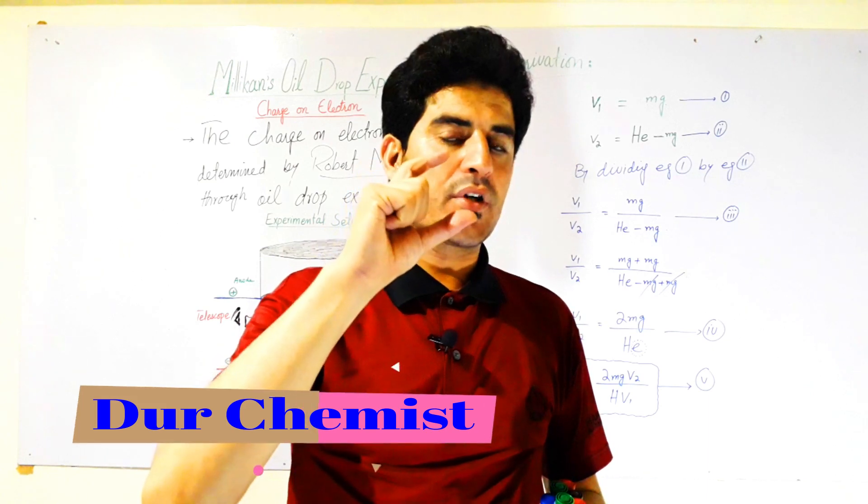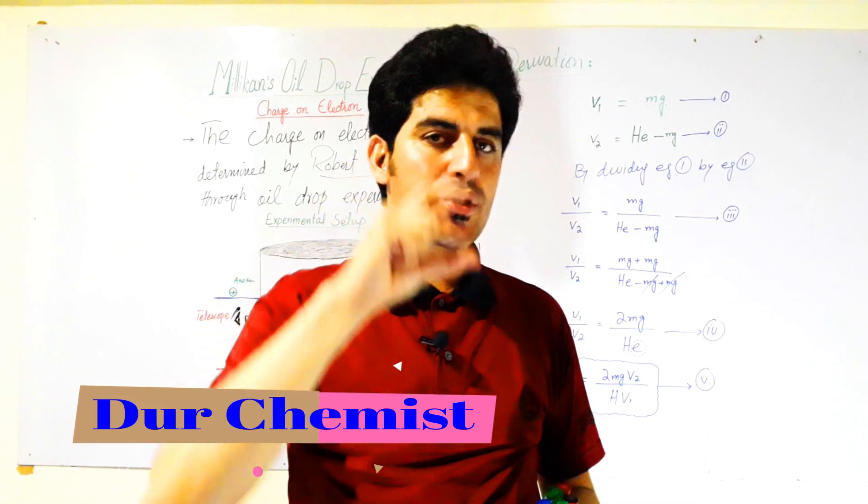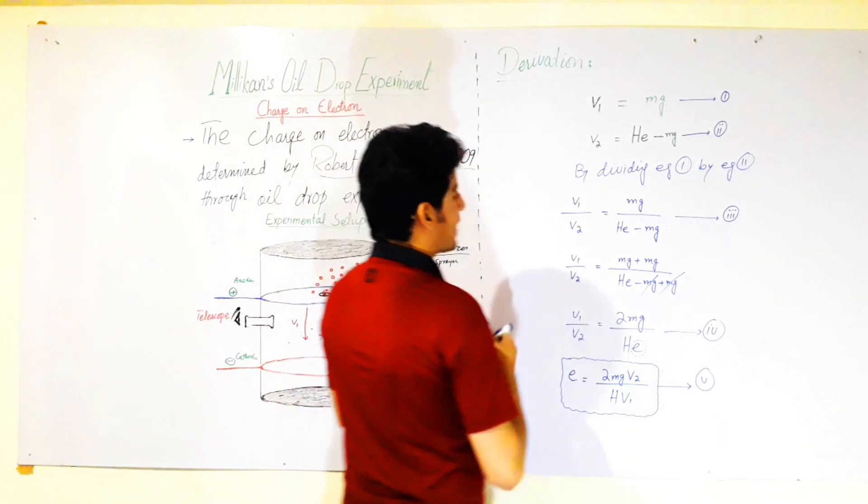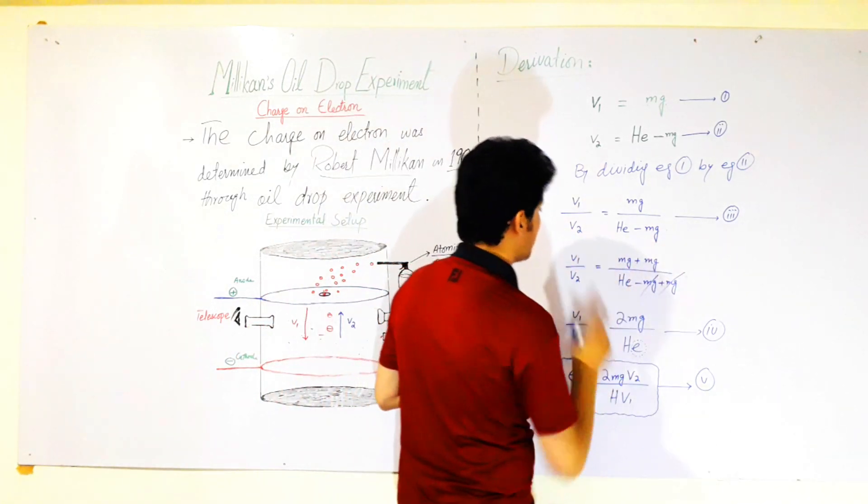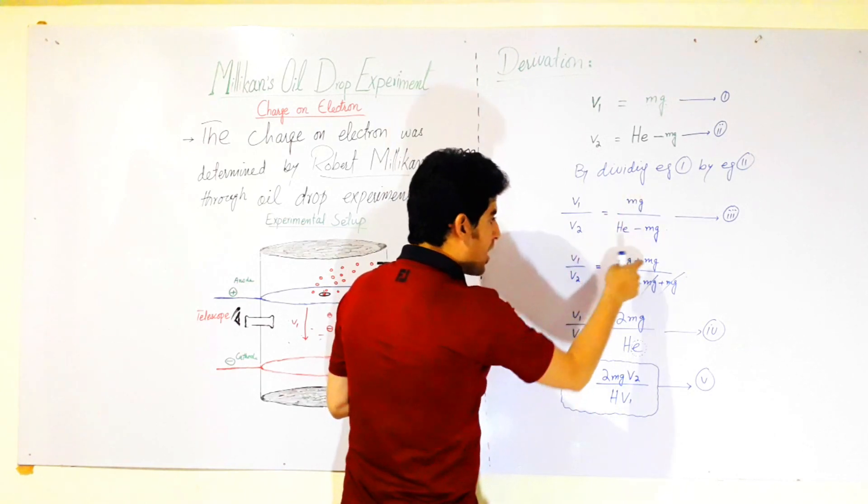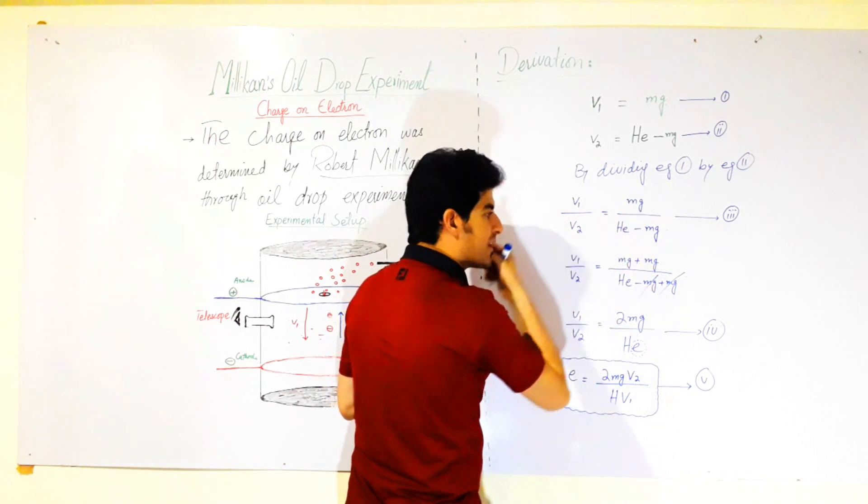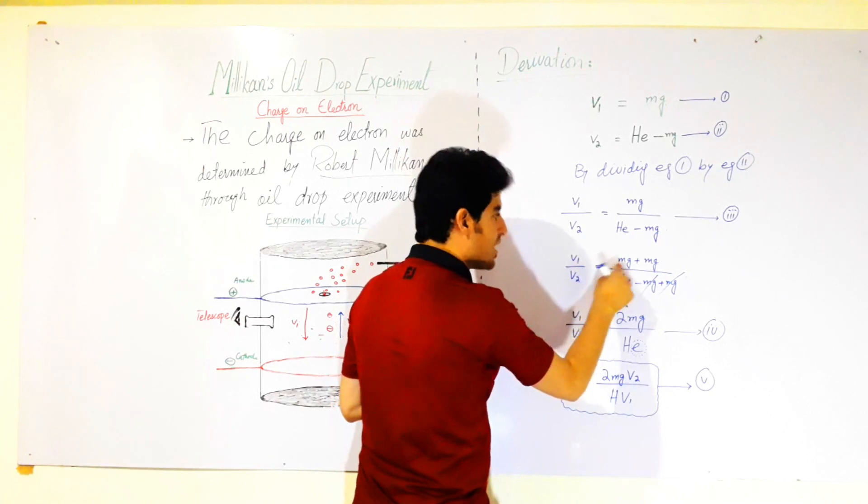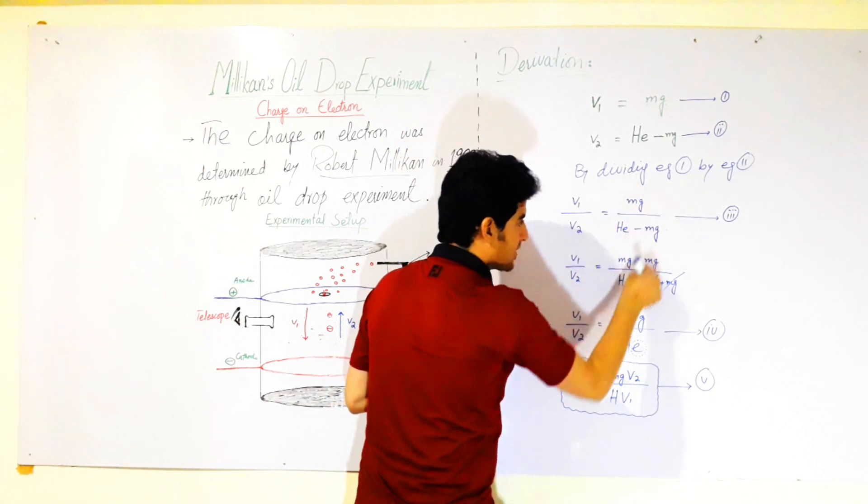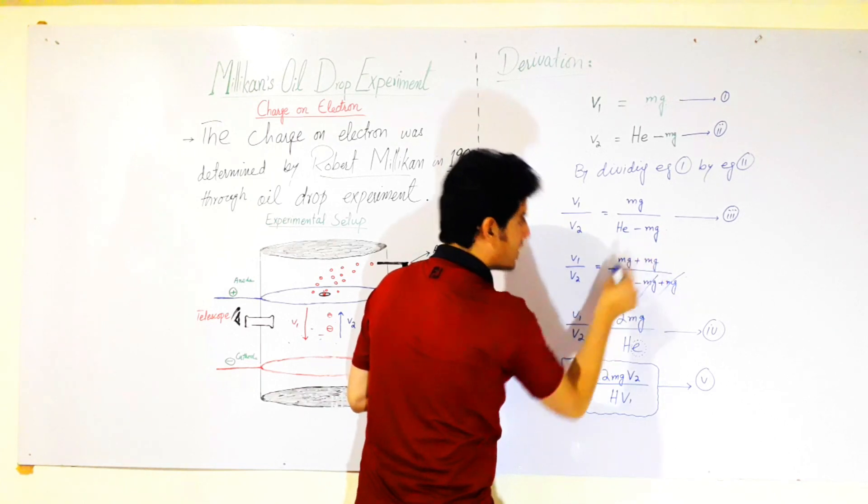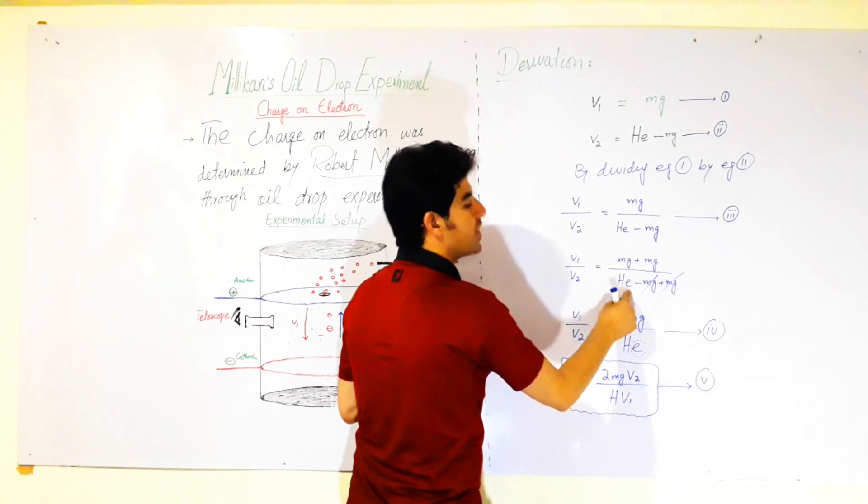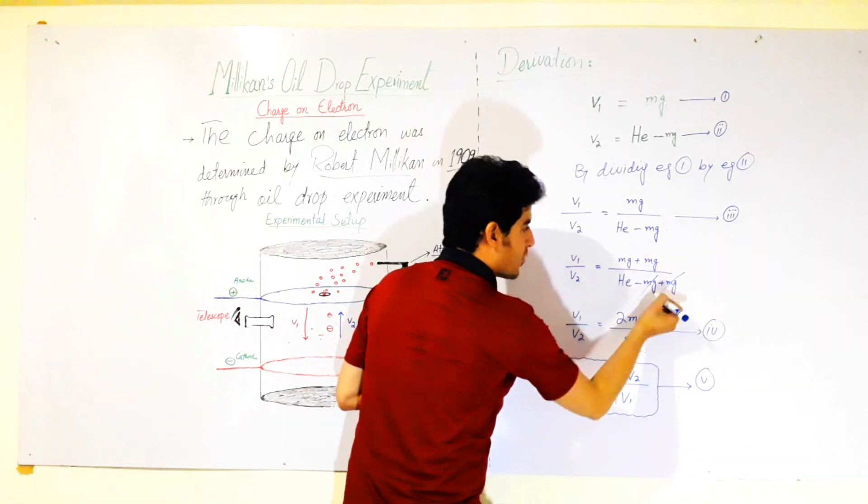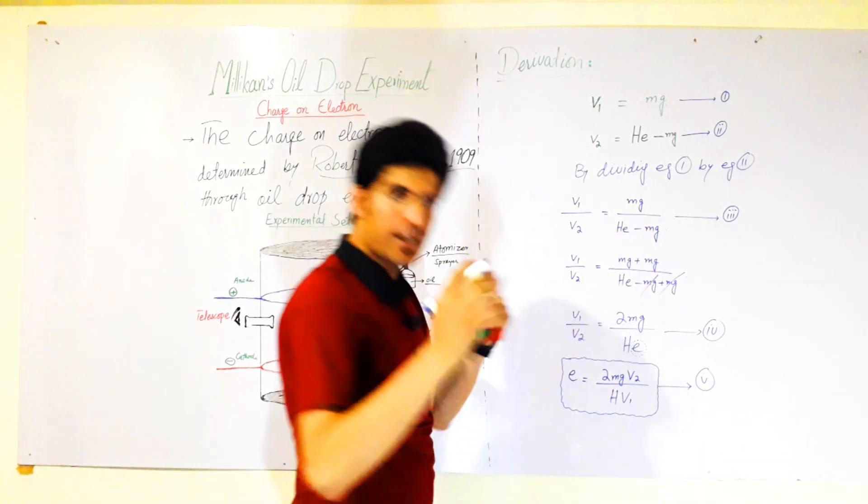Now in equation number three, we add mg in both the numerator and denominator. So v1 divided by v2 is equal to mg plus mg divided by qE minus mg plus mg. The minus mg and plus mg cancel out.